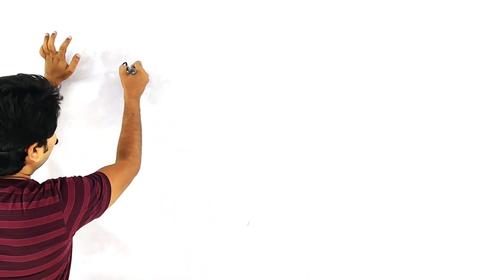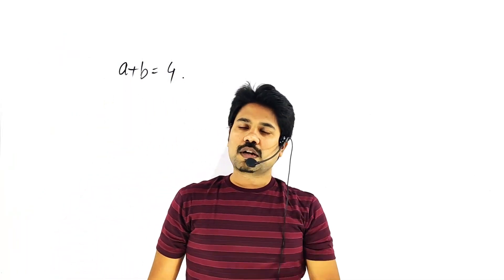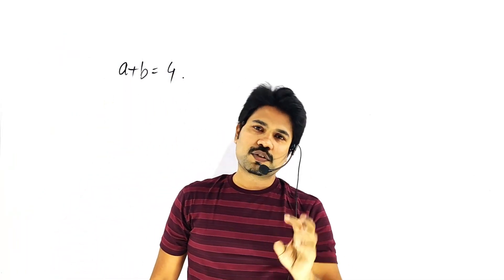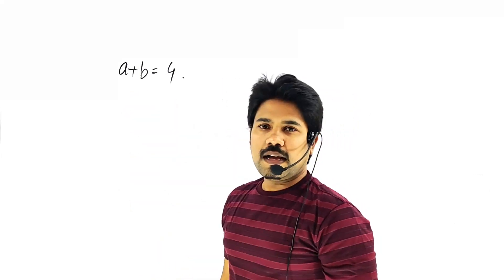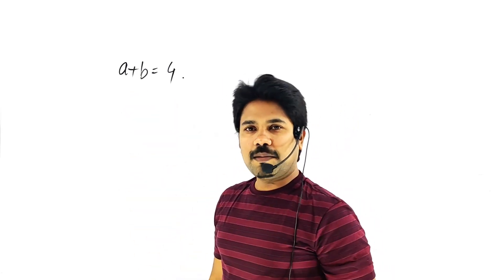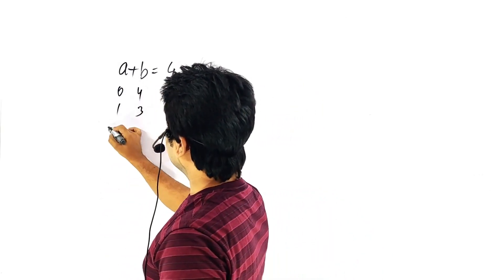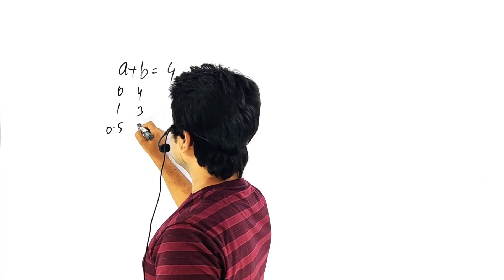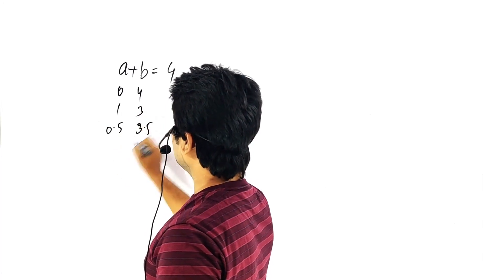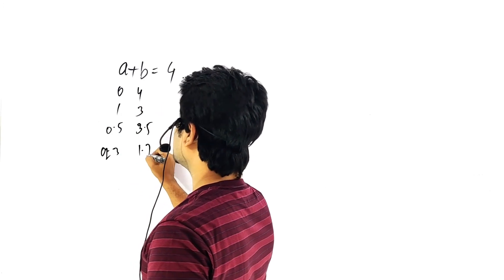See, first if a plus b is equal to 4, what are the values of a and b? There are infinite values for a and b, because if a is 0 then b is 4, if a is 1 then b is 3, if a is 0.5 then b is 3.5, and so on with infinite decimal values.